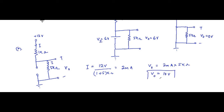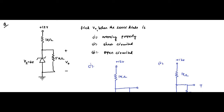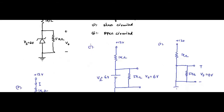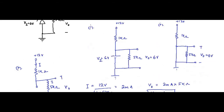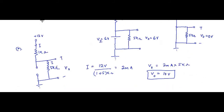So in this case when it is open circuited, the output voltage is equal to 10 volt. To summarize the three cases: when working properly, it is replaced by its breakdown voltage as a constant voltage source — output is 6 volt; when short circuited, output voltage is zero volt; when open circuited, the current flows through the circuit and the voltage drop across the 5 kilo ohm resistor gives 10 volt.